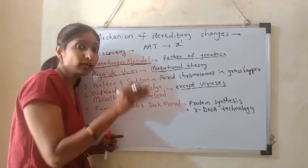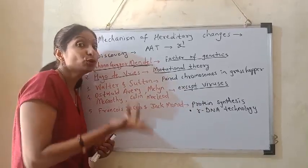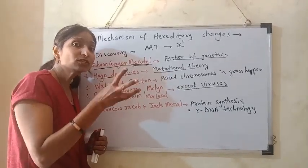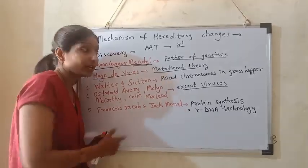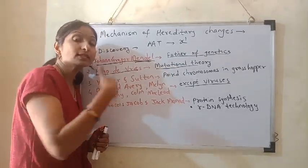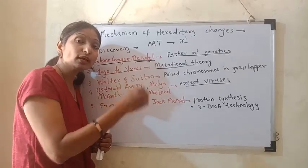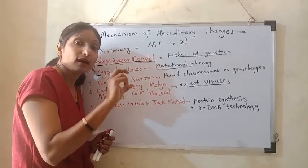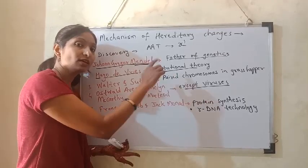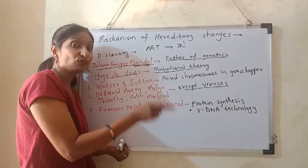A simple example: having dimples on the cheek is nothing but due to mutation — it is a good mutation. Another example of bad mutation: in hemoglobin, it should be glutamic acid, but it is replaced by valine. Because valine comes in place of glutamic acid, the structure of hemoglobin changes, and we suffer the problem of sickle cell anemia. The structure of the red blood cells changes, leading to a decrease in the production and proportion of hemoglobin. This mutation theory was discovered by Hugo de Vries — this is a two or three mark question.